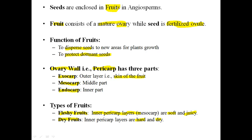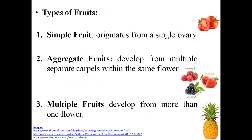Fruits can also be divided into three major types depending on their development from the carpels. A simple fruit is one which originates from a single carpel, meaning from a single ovary — for example, the tomato. Aggregate fruits are those which develop from multiple but separate carpels within the same flower.